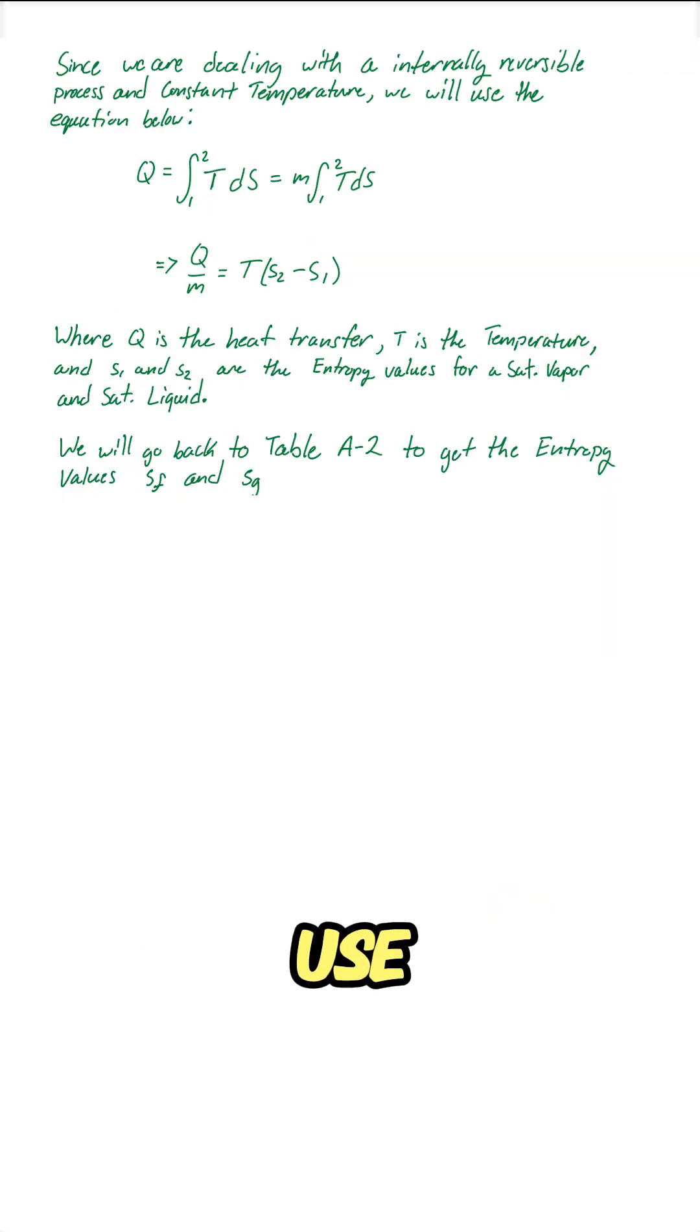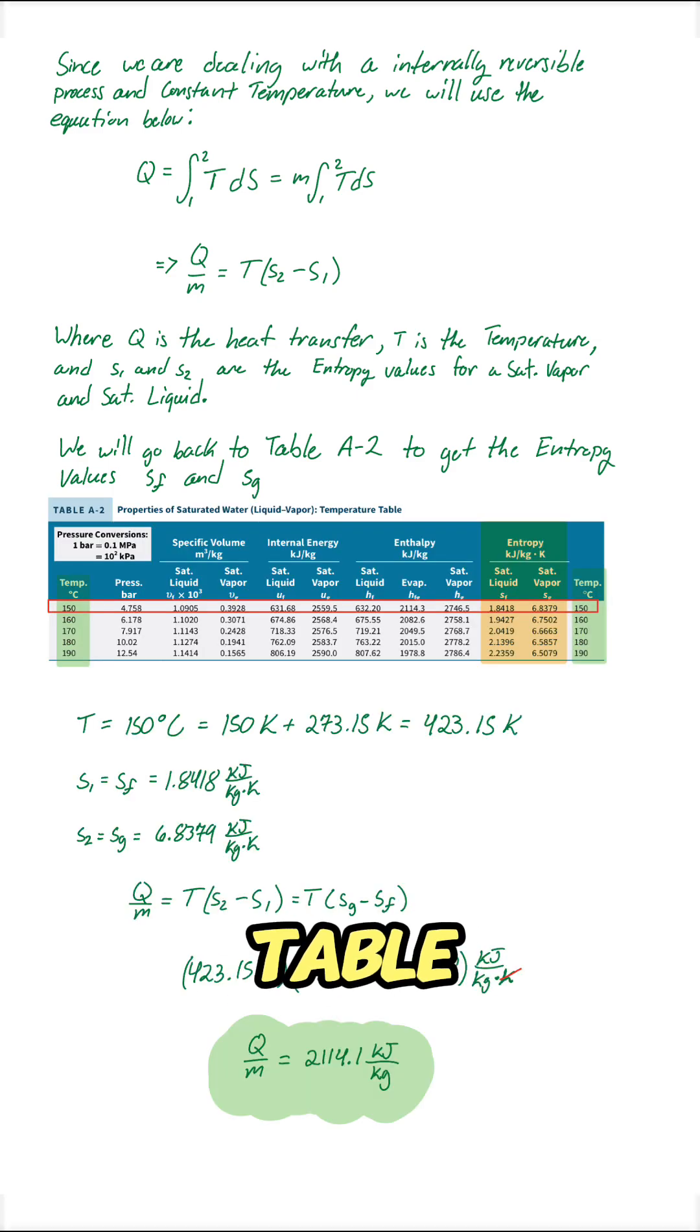For heat transfer, we use Q over M equals T times the change in entropy. Again, table A2 gives us entropy values for liquid and vapor. Substituting, we get around 2114 kilojoules per kilogram. Since the process is reversible, entropy production is zero.